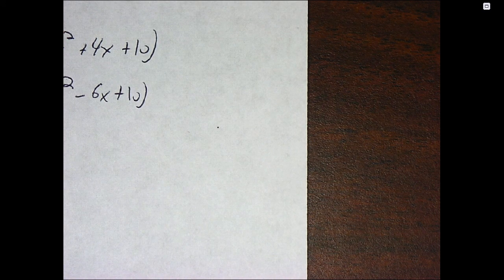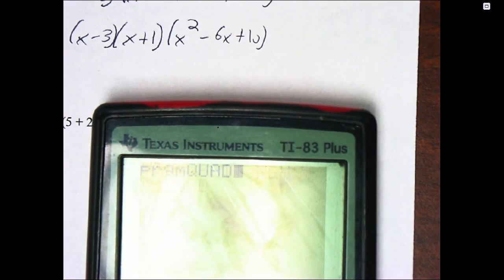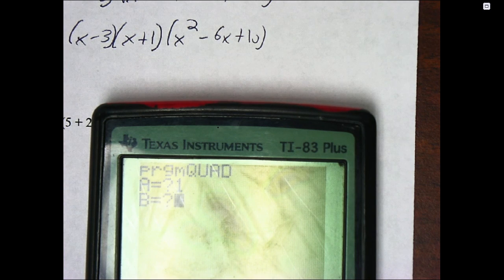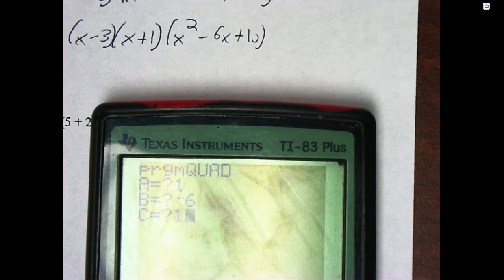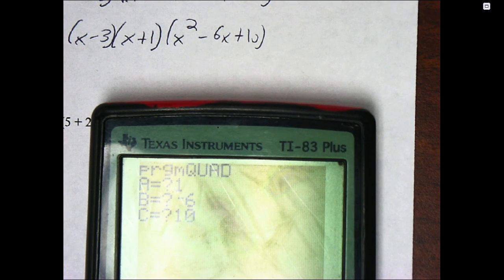See if I can get this all to show up here. So I'm going to run the quadratic formula. A is 1, B is negative 6, and C is 10. And it gives me a non-real answer, which is sort of what I was expecting since I didn't see anything else on the graph.